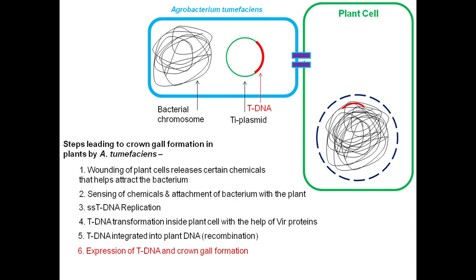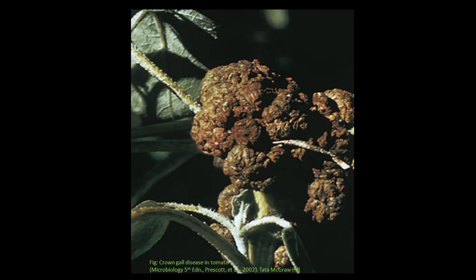Now finally, this T-DNA gets expressed with the help of the machinery of the plants, resulting in the crown gall formation. This is the picture of the crown gall disease in tomato.